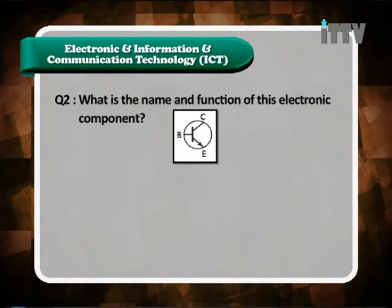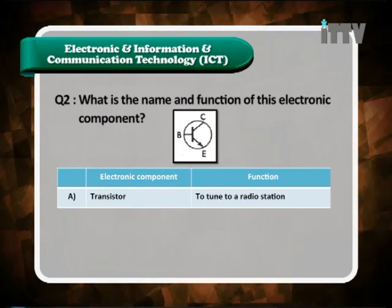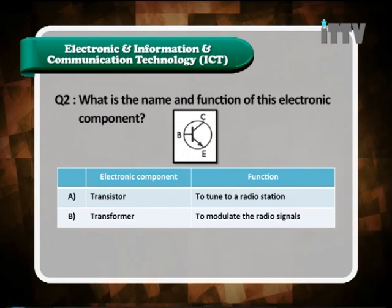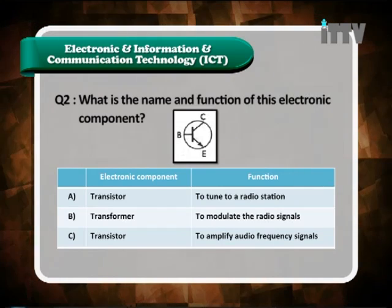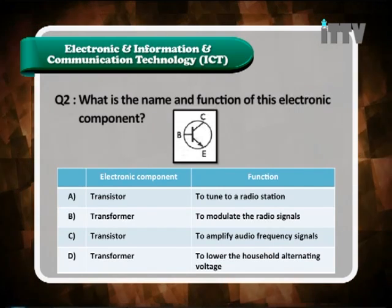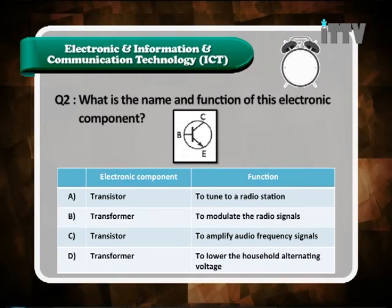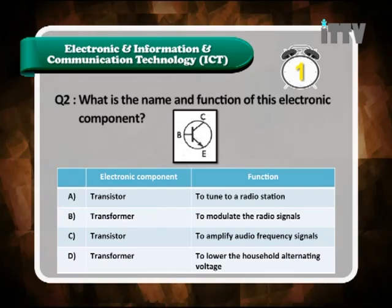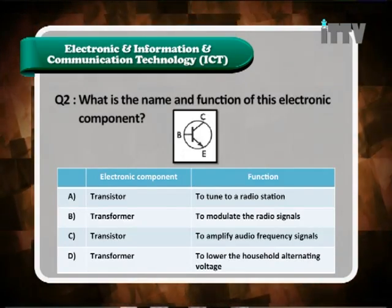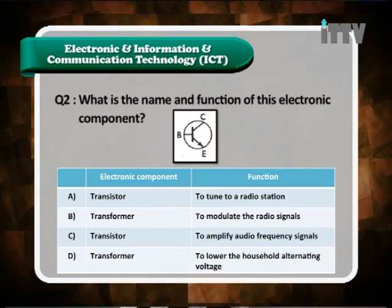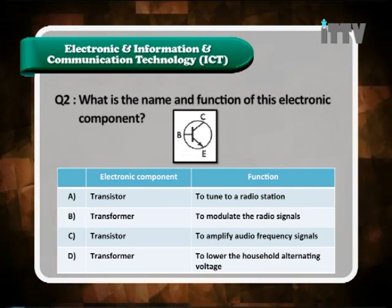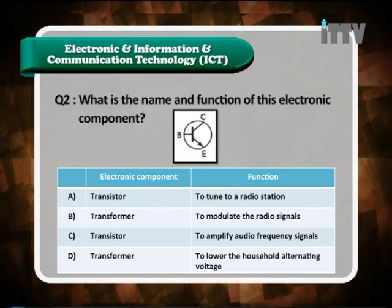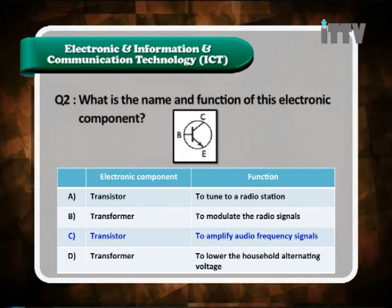Question 2: What is the name and function of this electronic component? A. Transistor — to tune to a radio station. B. Transformer — to modulate radio signals. C. Transistor — to amplify audio frequency signals. D. Transformer — to lower the household alternating voltage. The symbol shown is a transistor. Looking at the transistor options, the correct function is to amplify audio frequency signals. The answer is C.